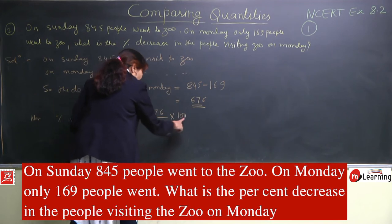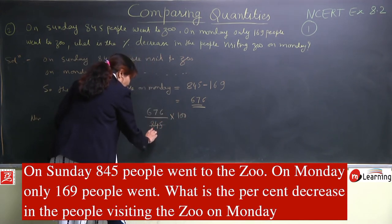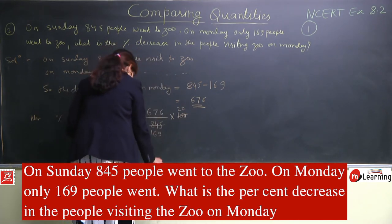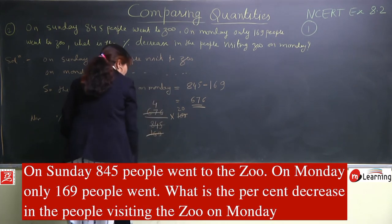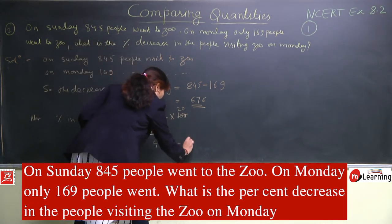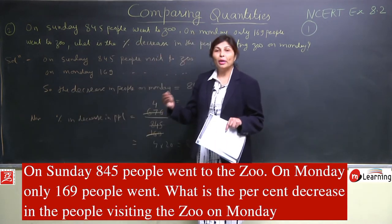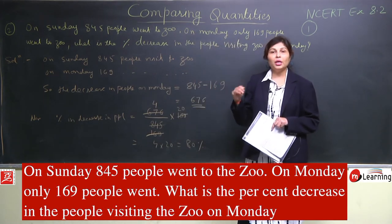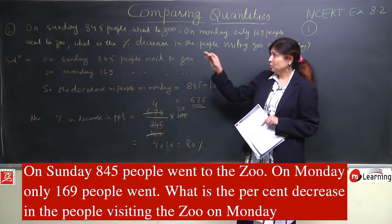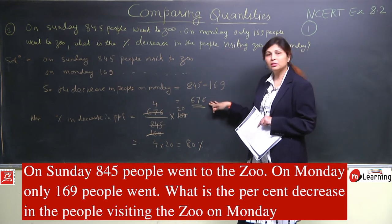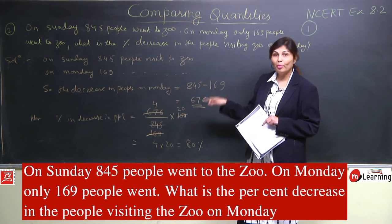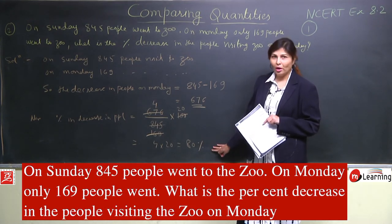Ab hum ise katenge: 676/845 × 100. Cutting down: 5 se cancel hoga, phir 169 se. Finally it is 20 × 4 = 80%. So 80% ka decrement ho gaya Sunday to Monday. To ab aap imagine karo, Tuesday to aur kam log honge. Working days mein hamesha log kam jaenge bahar outing pe aur Sunday-Saturday aur doosri holidays pe log zyada jaenge. Percentage wise 80% ka decrement ho gaya zoo mein jo log visit kiye.